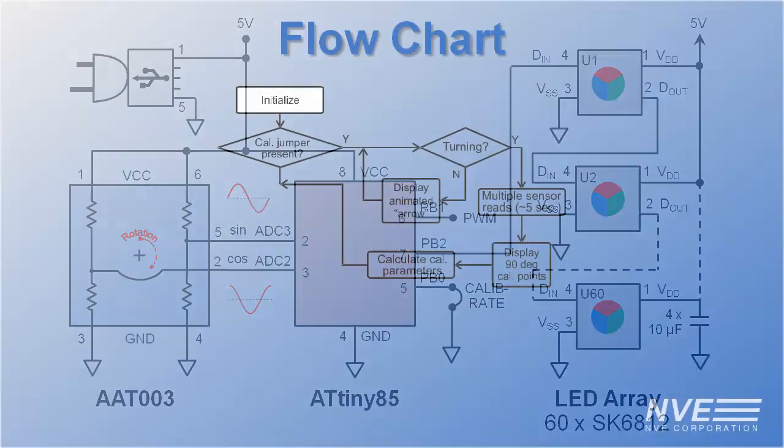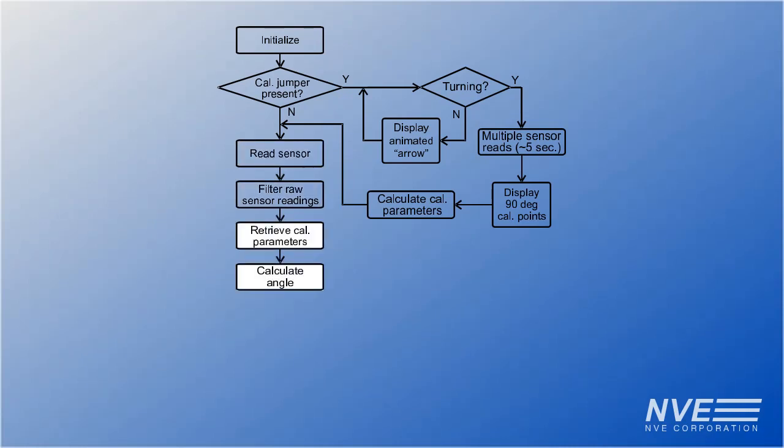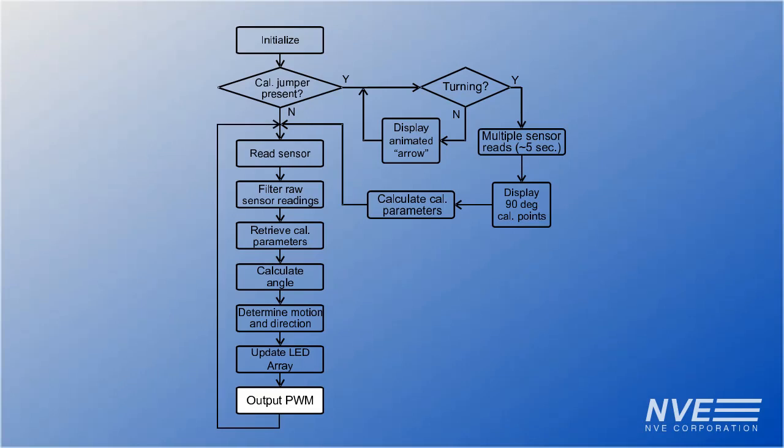Here's the program flow chart. This is the optional calibration routine. For normal operation, we read the sensor, filter the readings, calculate the angle using the calibration parameters, determine motion and direction, and finally update the LEDs and the PWM output. We wrote the program in the Arduino IDE and it's available on GitHub.